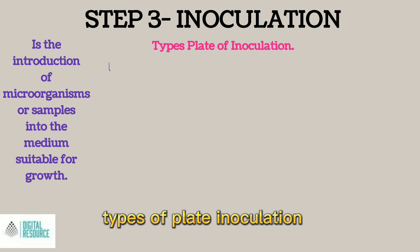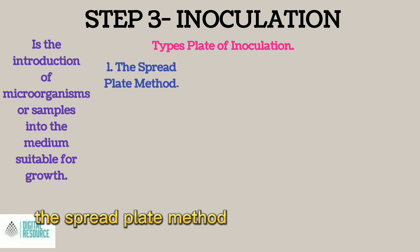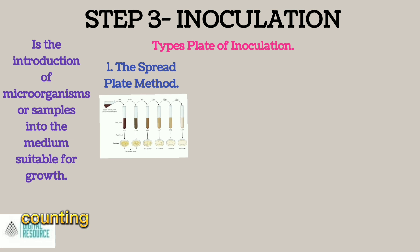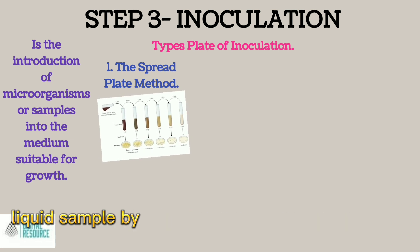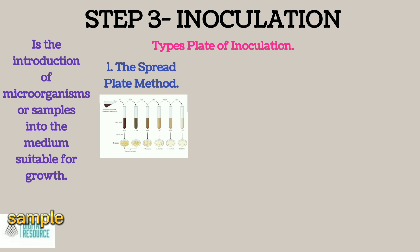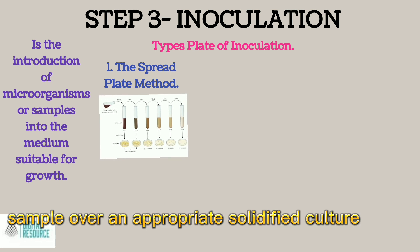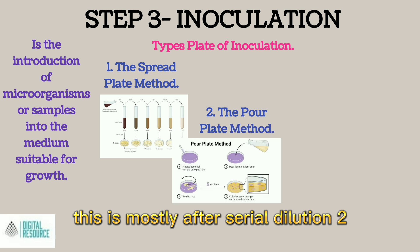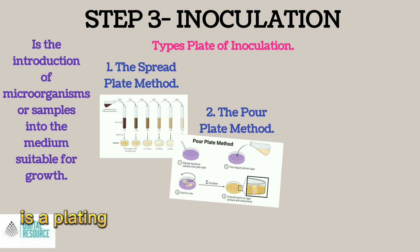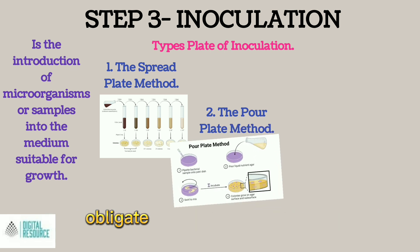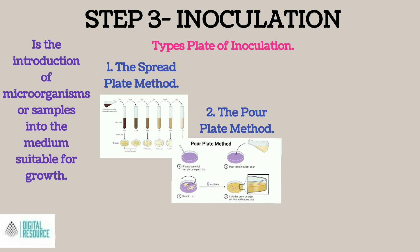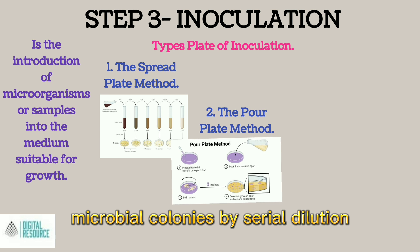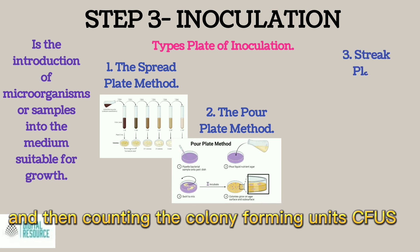Types of Plate Inoculation. 1. The Spread Plate Method is a microbiological laboratory technique for isolating and counting the viable microorganisms present in a liquid sample by spreading a certain volume of the sample over an appropriate solidified culture media. This is mostly after serial dilution. 2. The Pour Plate Method is a plating technique commonly used for obligate and anaerobic bacteria. This technique is used to isolate microbial colonies by serial dilution and then counting the colony-forming units (CFUs).